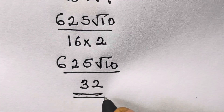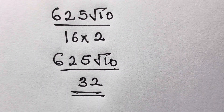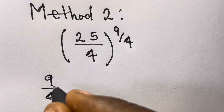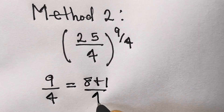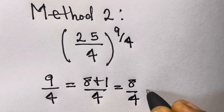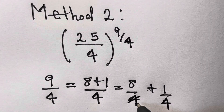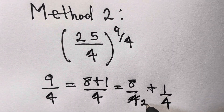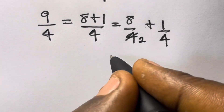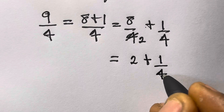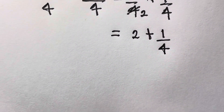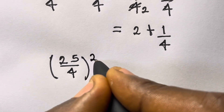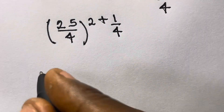So that is our answer for Method 1. For Method 2, we can express 9 over 4 as 8 plus 1 divided by 4, which means we have 8 divided by 4 plus 1 over 4. Since 8 divided by 4 is 2, we have 2 plus 1 over 4. So the above expression becomes 25 divided by 4, raised to the power 2 plus 1 over 4.